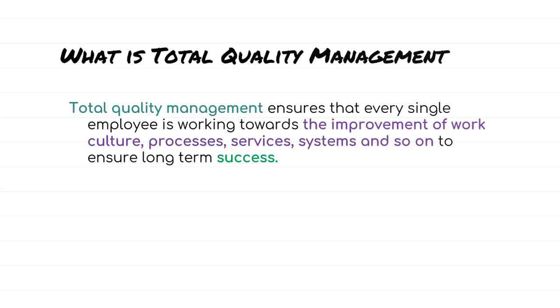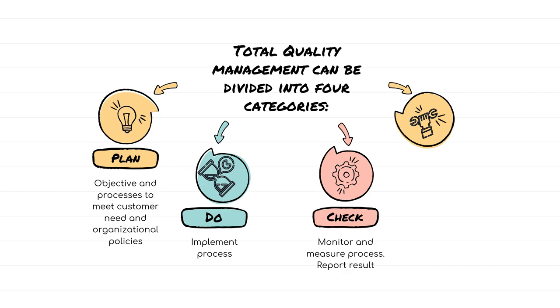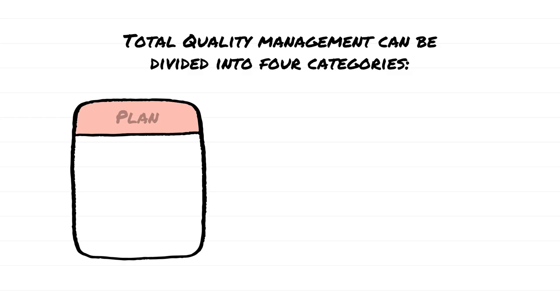Total Quality Management can be divided into four categories: Plan, Do, Check, and finally Act. The first phase is Planning.